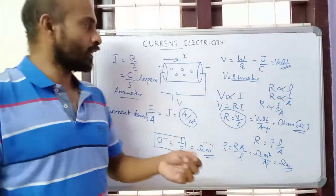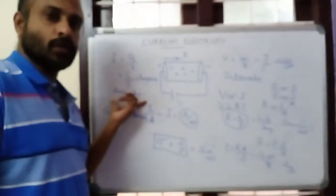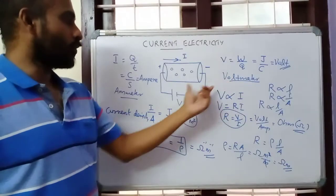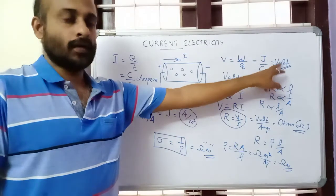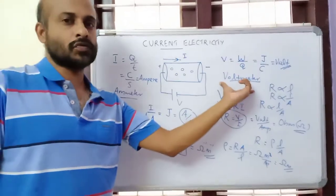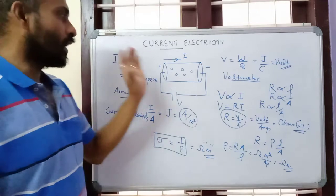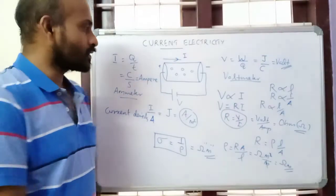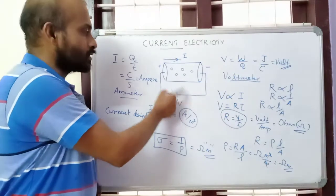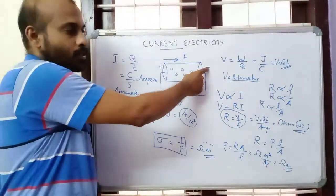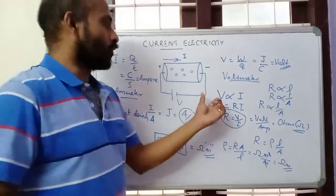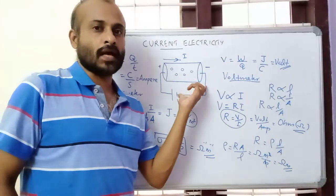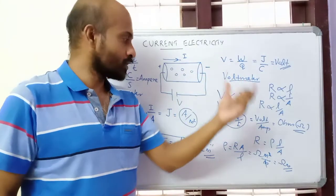As an introduction to the chapter current electricity, we have seen: electric current, its SI unit, and its equation; the device used to measure electric current is the ammeter; potential difference equals work by charge, SI unit is joule per coulomb or volt, and the voltmeter measures potential difference. When electrons need to flow through a conductor there should be a potential difference — the cell creates it, positive end at high potential, negative end at low potential. Ohm's law states V is proportional to I at constant temperature.